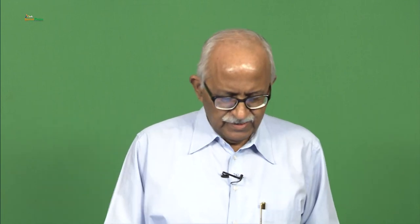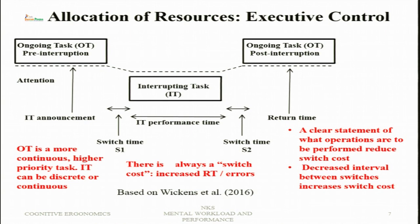When the interrupting task starts, there is a time gap when it can take place, and this time gap is called switch time. There is some amount of time lost when switching from the ongoing task to the interrupting task. When the interrupting task is going on, nothing else can be done. After the interrupting task is over, because the ongoing task continues, again there is a switch time. S1 and S2 are the switch times.